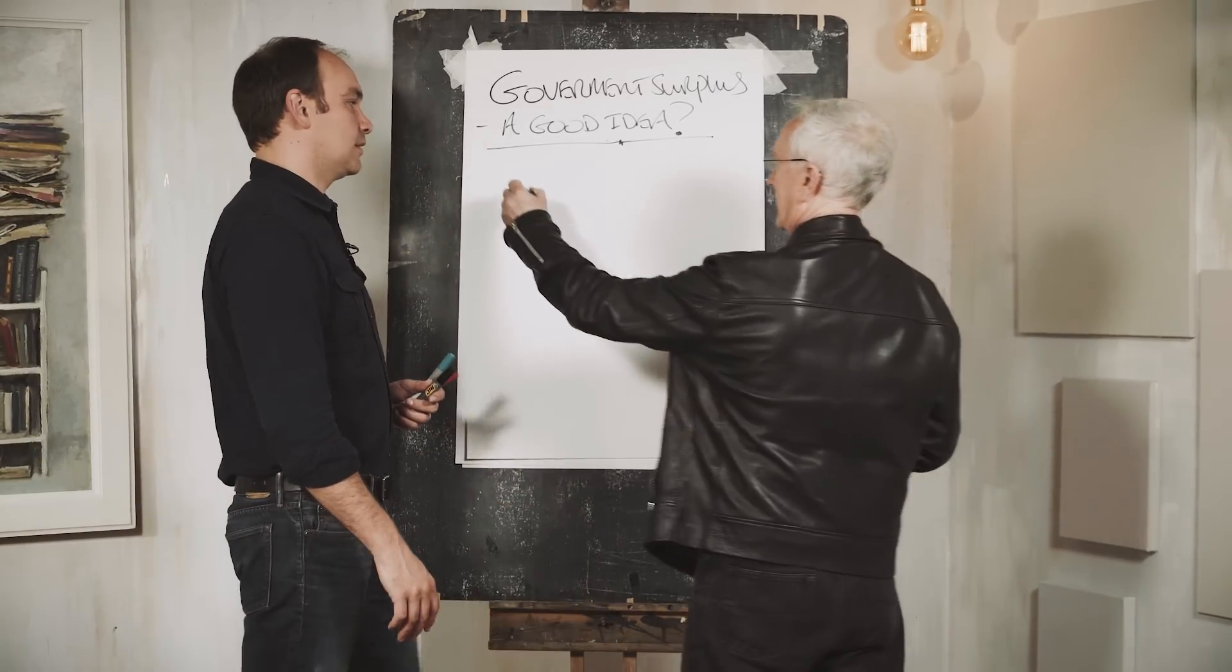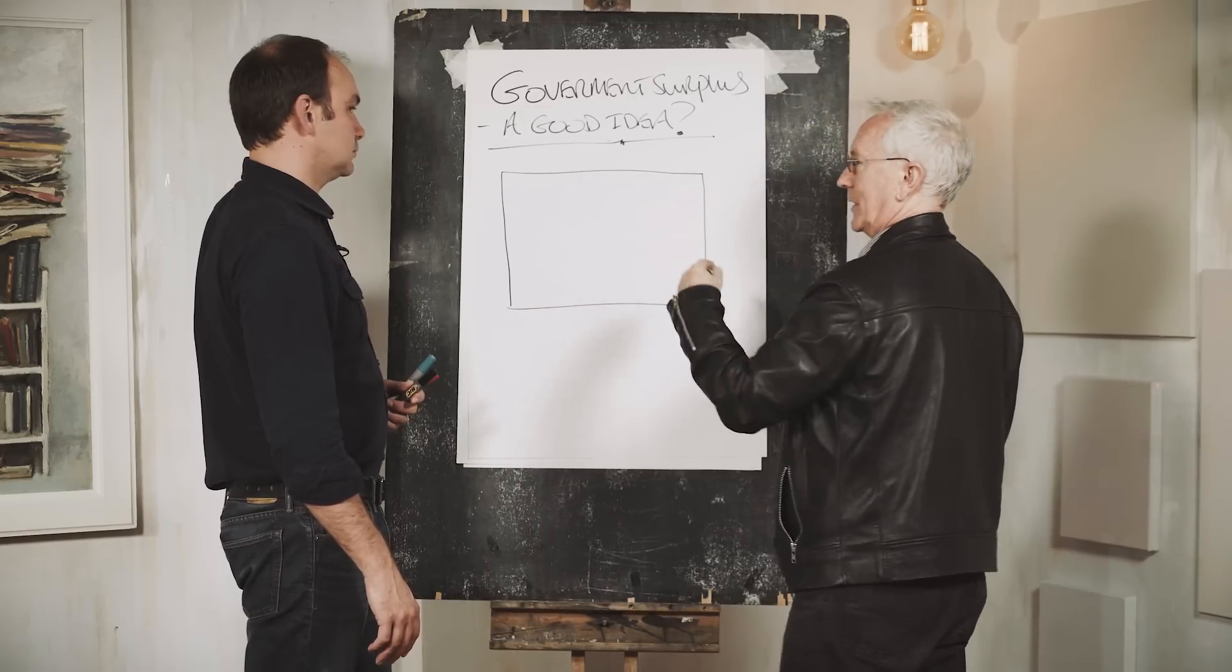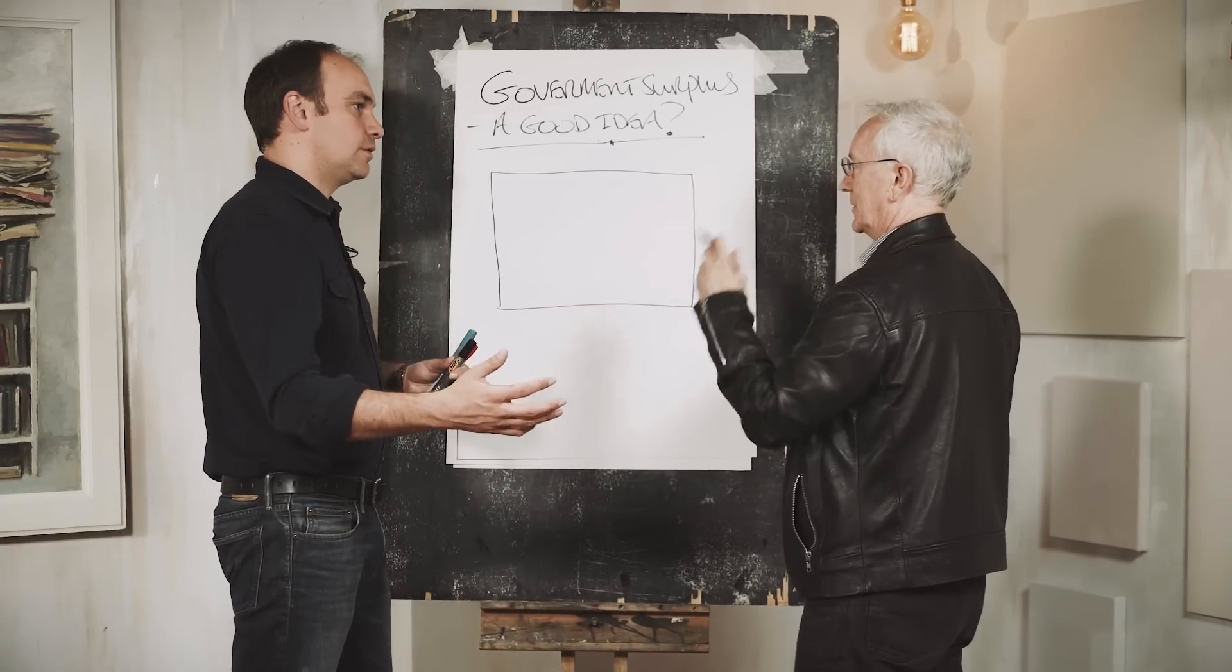What people do is they think like their own household where they can actually spend less than they earn and it all works out nice and easily. So is this extrapolating a household budget into a government budget? Yeah, and that's the error everybody's making.